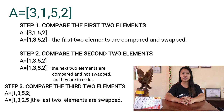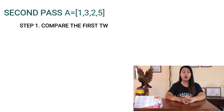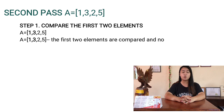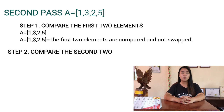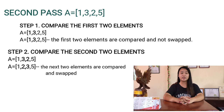Now we need to start the second iteration. Step 1: [1, 3, 2, 5]. The first two elements, 1 and 3, are compared and not swapped. Step 2: [1, 2, 3, 5]. The next two elements, 2 and 3, are compared and swapped.